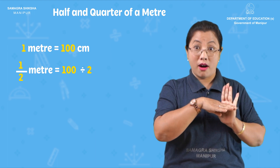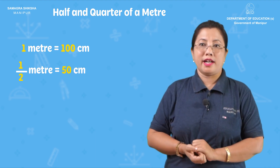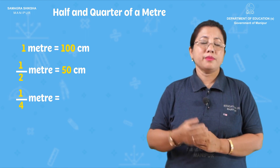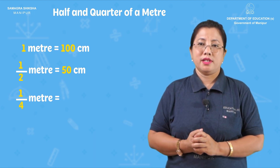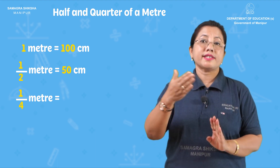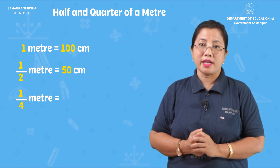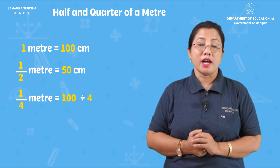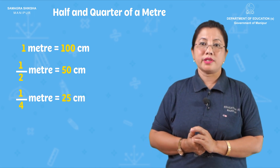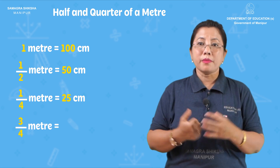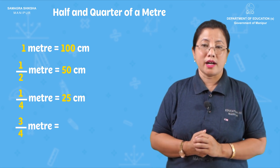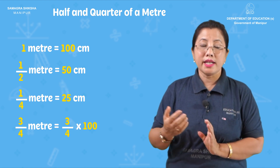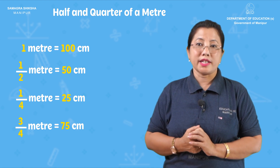That means 1 by 2 of a meter is 50 centimeters. And 1 by 4 of a meter: 1 by 4 into 100 equals 25 cm. Then 3 by 4 of a meter: 3 by 4 into 100 equals 75 cm.